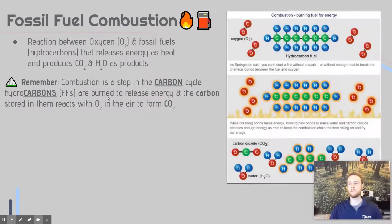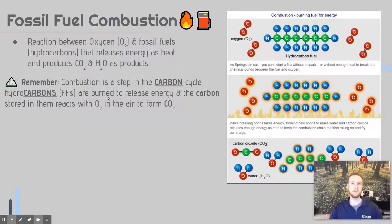Looking at this diagram, we can see the oxygen surrounding the hydrocarbon fuel source. When they get close enough and the oxygen reacts with the carbon, that releases a lot of energy — the valuable aspect of fossil fuels. That produces carbon dioxide when the carbon and oxygen interact, and it also produces water from the hydrogen and the oxygen.